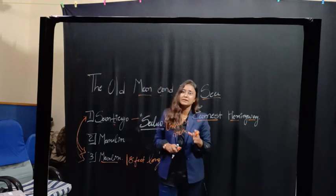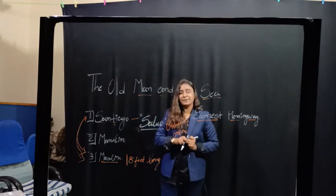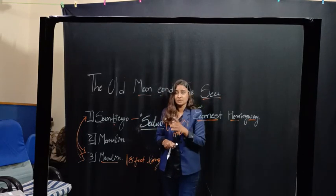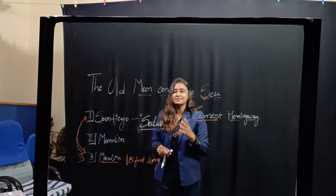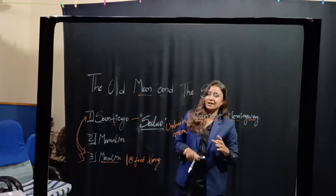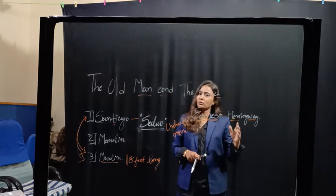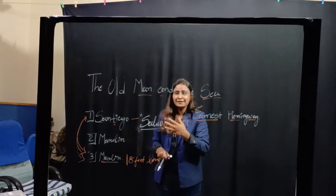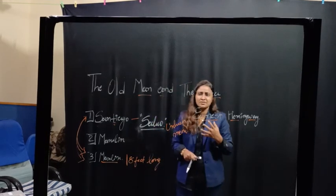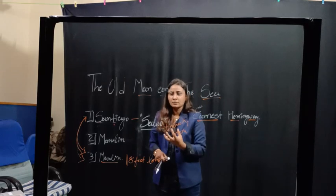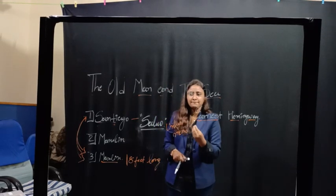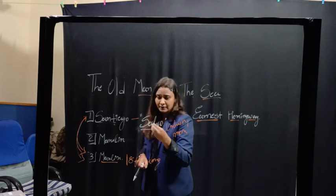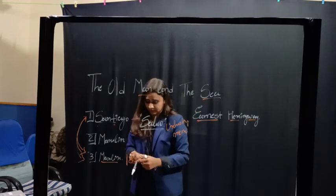So what happens is that there was a time when Santiago was in his 20s and 30s, he was considered the most celebrated and the most courageous fisherman of the whole town. But right now he is old and people are making fun of his courage and pride. Right now Santiago is at the verge of defeat.